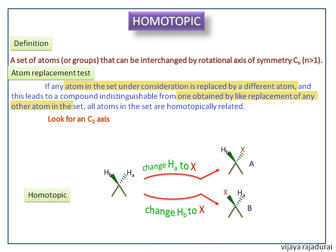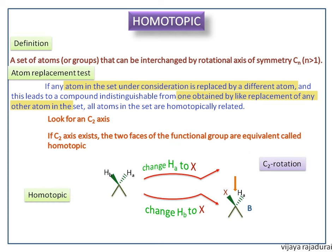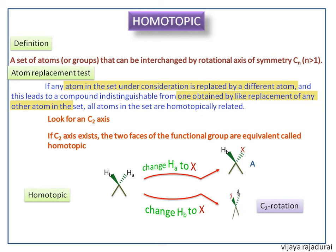To identify homotopic, first we do a C2 rotation. For molecule A, after C2 rotation, we get a structure that is structurally equivalent to structure B. Next, we do C2 rotation for molecule B. After C2 rotation of molecule B, the structure is equivalent to structure A.